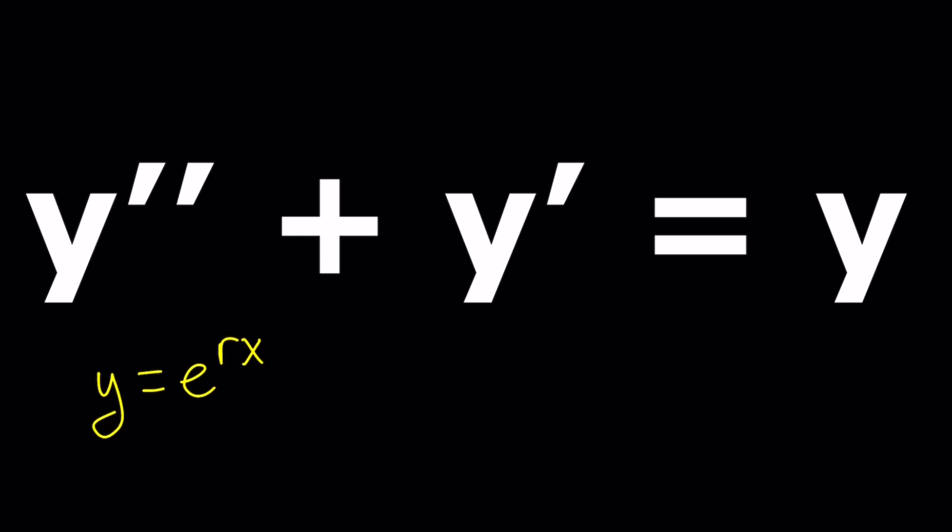So if we make this assumption and go ahead and differentiate it, we get the following. y prime from here is going to be, because the derivative of e to the rx is e to the rx multiplied by the derivative of the inside by the chain rule, you're going to get r times e to the power of rx.